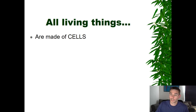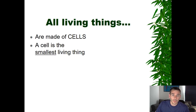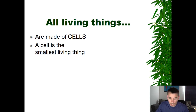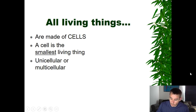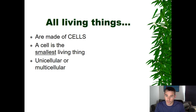That's our first characteristic of life — made of cells. We're going to talk a lot more about cells later in the year, but for now we just need to refresh ourselves on what a cell is. A cell is the smallest living thing we categorize as alive. Cells can exist just by themselves as unicellular organisms, or they can group together to form multicellular organisms. For example, humans are made of many, many cells, not just one.